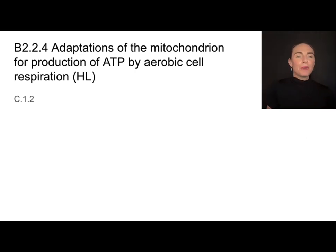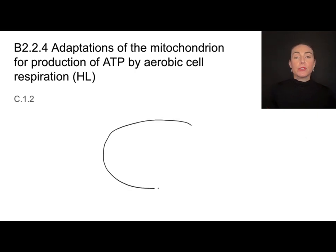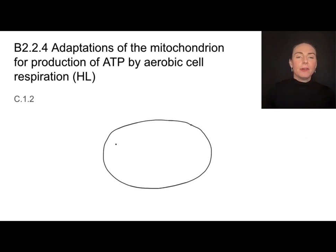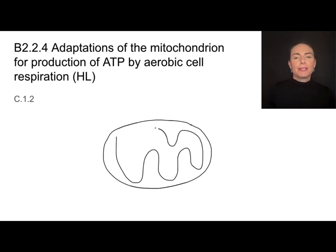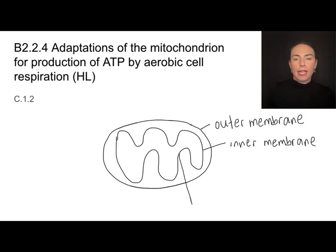I'm going to start out by drawing a mitochondria. A mitochondria has two membranes — it has an outer membrane and then an inner membrane. And the inner membrane is highly folded into this more squiggly type shape. Those folds in the inner membrane are something called cristae.